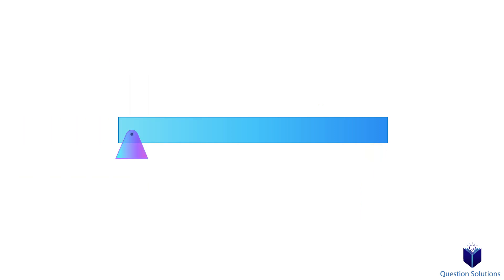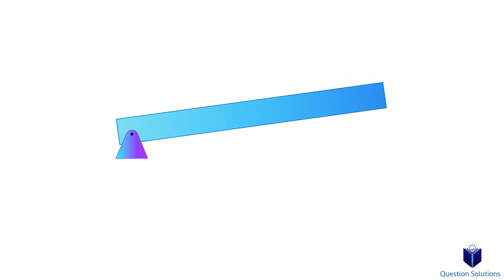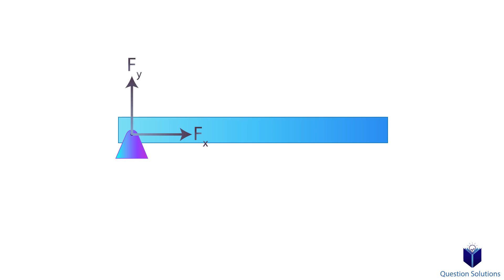Now let's take a look at the pin side. With the pin, the bar can rotate, but it can't move vertically or horizontally. So that means at a pin, it would exert two forces — one in the x direction and another in the y direction. In all of the supports we just looked at, rotation can occur.